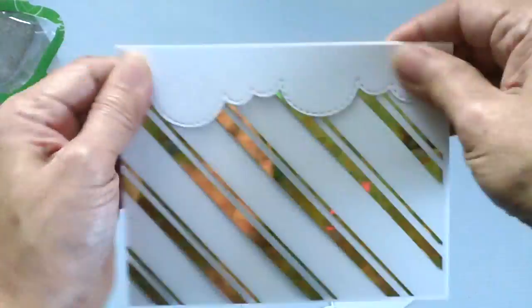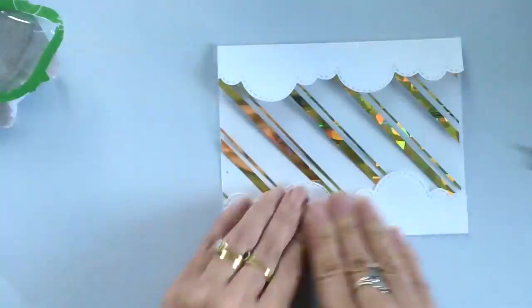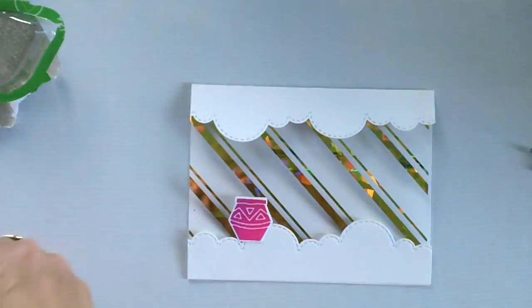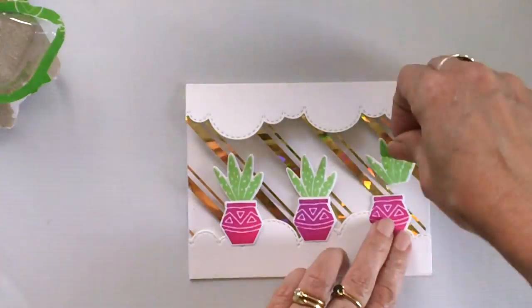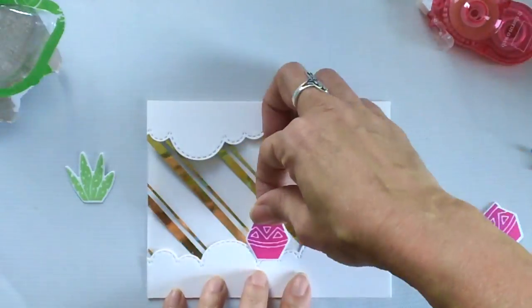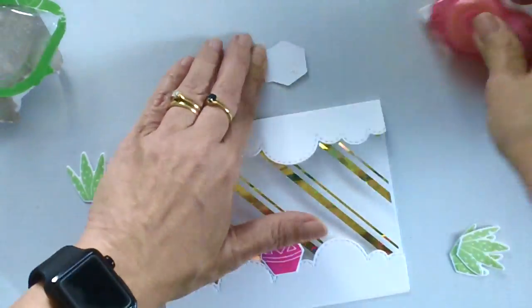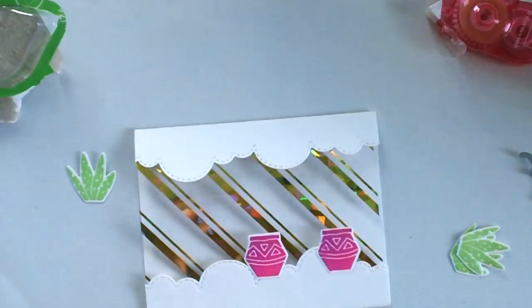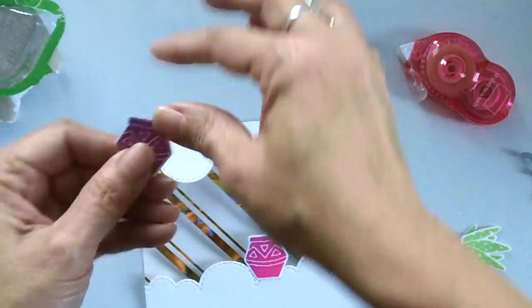So I'm just adhering the first cloud there and then using the sticky tape runner to adhere the second one at the bottom and then now I'm going to adhere all of my images using the same sticky tape runner from Thermoweb.